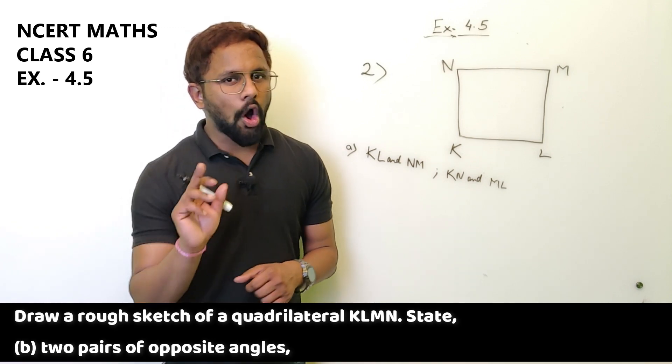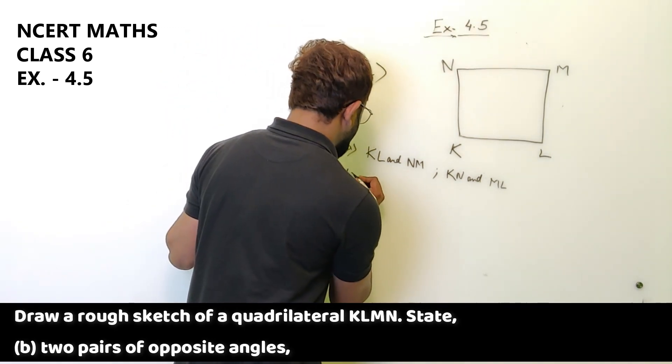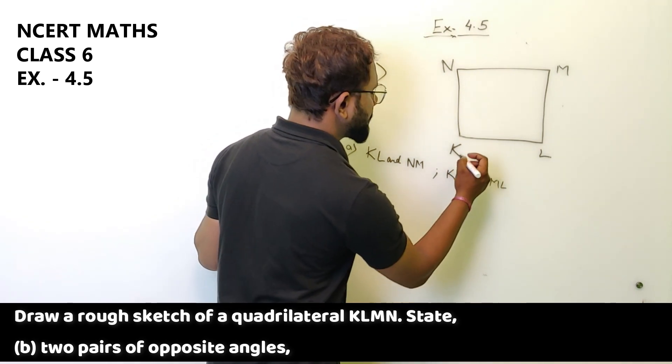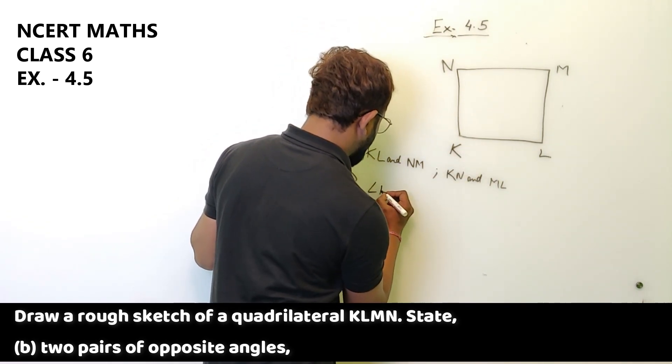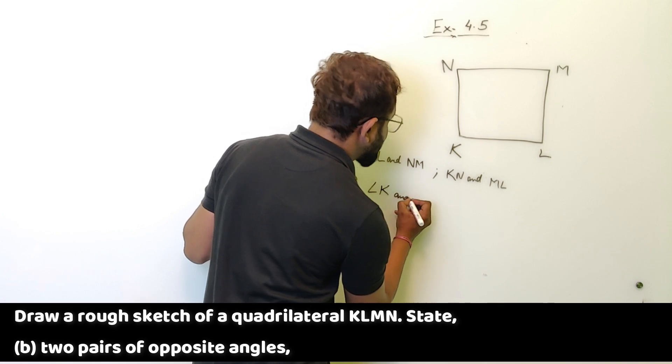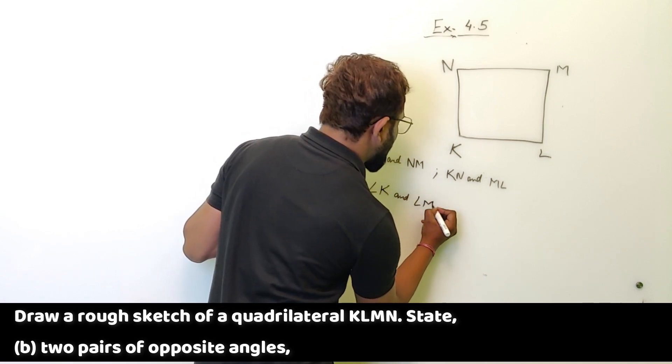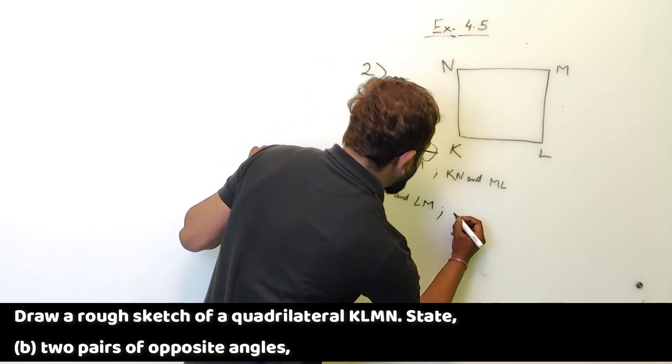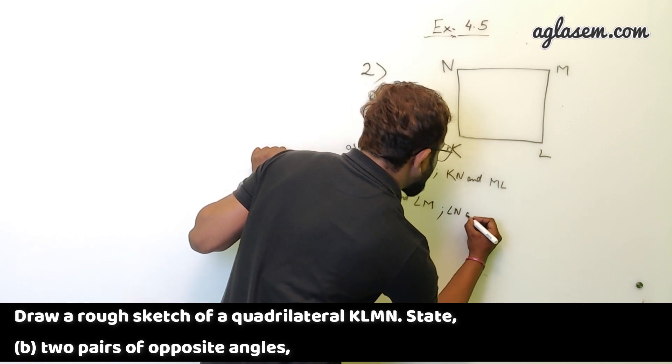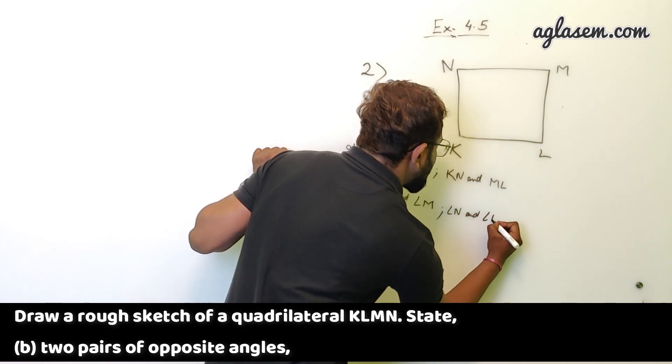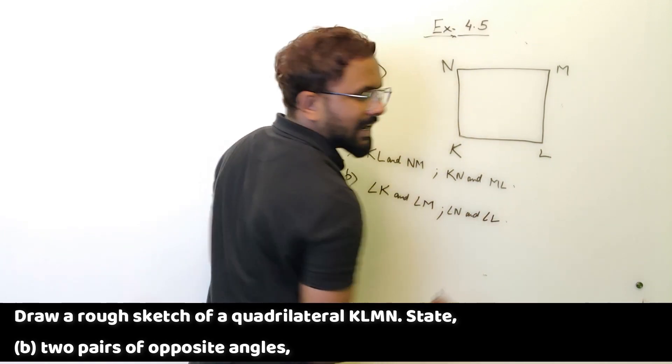B part is two pairs of opposite angles. Two pairs of opposite angles. So angle K and angle M are opposite to each other, and angle N and angle L are opposite to each other.